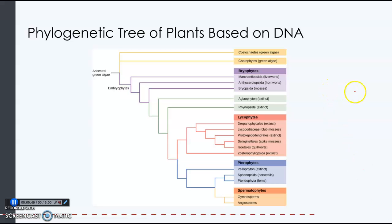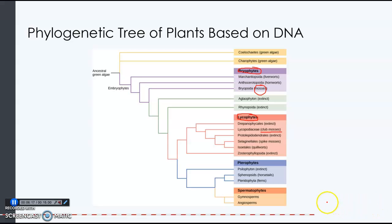We're not going to be concerned about learning every single type of plant, but I do want you to know that mosses are bryophytes. Liverworts and hornworts have their own phylum. The lycophytes are the club mosses, and the pteridophytes are the ferns. The horsetails are sphenopsids, or sphenophytes. The gymnosperms and angiosperms are in a group called the spermatophytes.